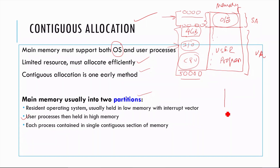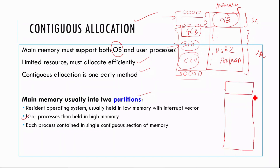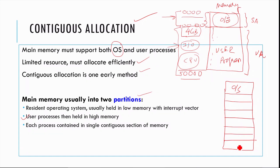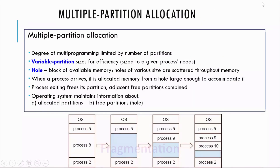When we have partitions in memory — the operating system section and the rest — we can see these partitions clearly. The operating system occupies its partition and the remaining locations are free.